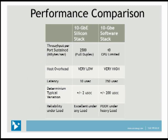Here we have a performance comparison of our silicon stack versus a software stack. Throughput per port sustained in megabytes per second for the silicon stack is around 2,500 in full duplex. For the software stack, you will only get 40 megabytes per second — it's CPU limited. Even if you have a multi-core computer dedicating a full single core to the software stack, you are still going to be CPU limited at 40 megabytes per second. The host overhead is very low for the silicon stack and very high for the software stack. Latency for the silicon stack is around 10 microseconds, versus 250 microseconds for the software stack.